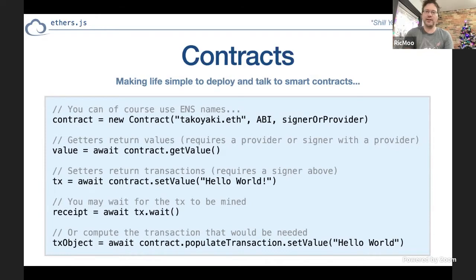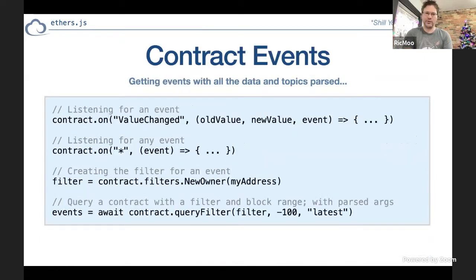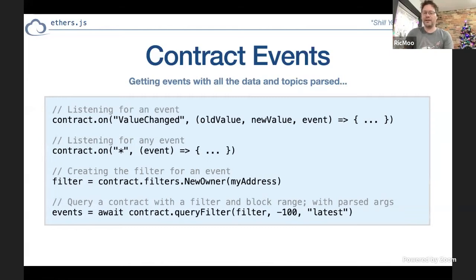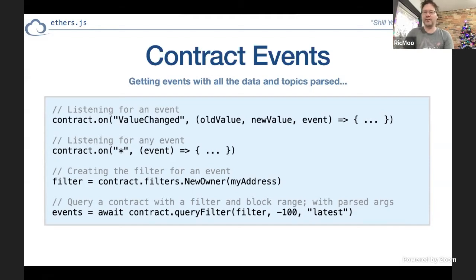A lot of these things are designed for frameworks to use more easily. There are events — you can create filters, listen to events, and ethers will parse all the arguments out for you. One quick note: anywhere that takes a block tag can also take a negative number — for example, querying a filter with negative 100 to latest simply means 'within the last 100 blocks.'